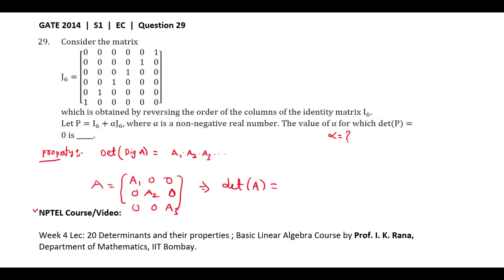The determinant of this matrix A is simply the product of diagonal elements. Here the matrix J6 is a diagonal matrix. The determinant of J6 is simply the product of the diagonal elements here.